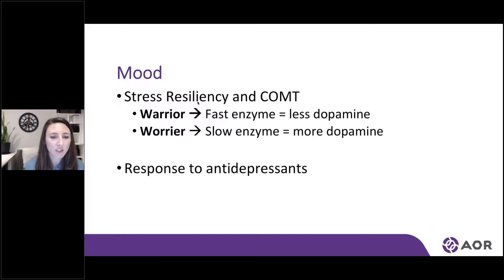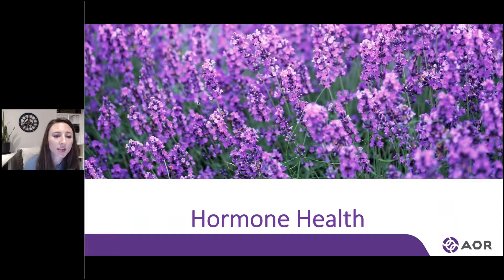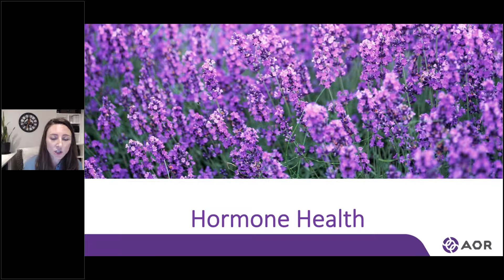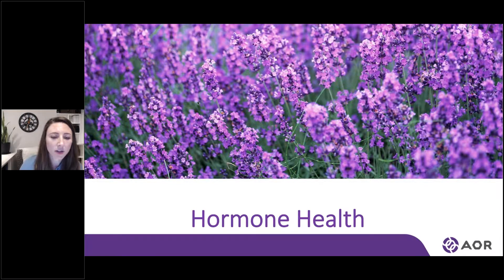This is starting to get into a branch called pharmacogenomics. Individuals who have the FAST enzyme are actually predicted to be poor responders to antidepressants. So we can start to predict which medications are going to be ideal for certain individuals, helping them to alleviate the trial and error approach, especially when it comes to mental health and the drugs they're using. It can be a matter of life and death in those scenarios.